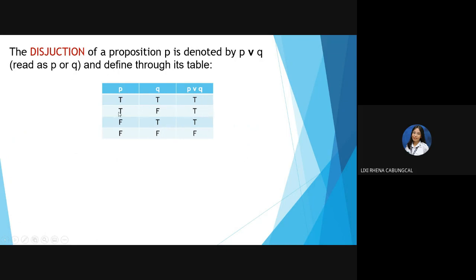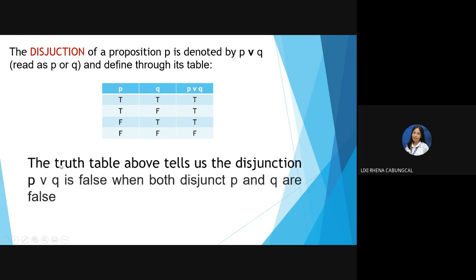If there is any true value in a disjunction, it is automatically true — unlike conjunction which requires all true. The disjunction P ∨ Q is false only when both P and Q are false.